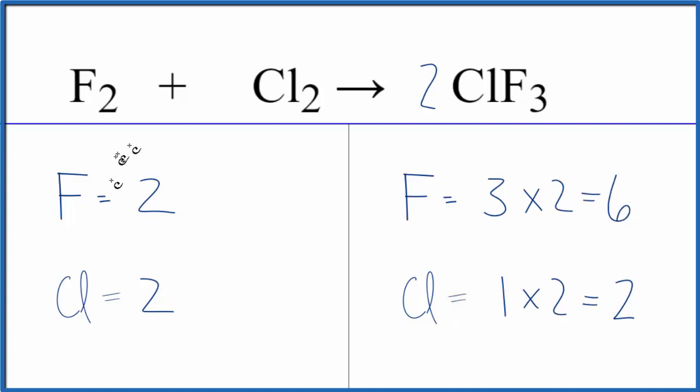We have six fluorine atoms and two here. That's pretty easy to fix though. This fluorine is by itself. So, if we put a coefficient of three in front of the F2, two times three, that'll give us six. So, now we have six fluorines on each side and then two chlorines.